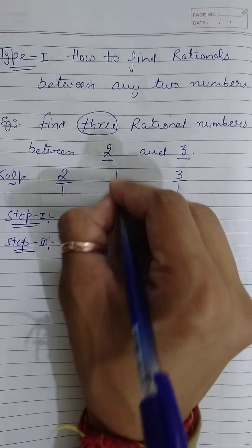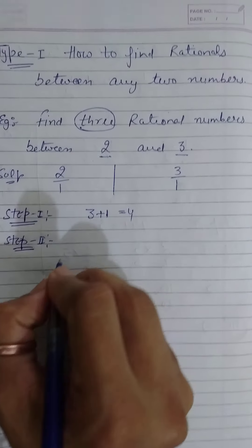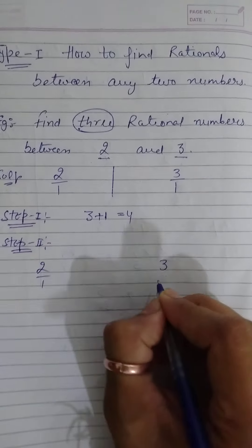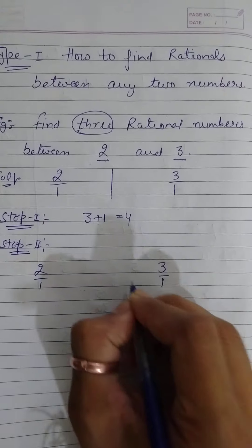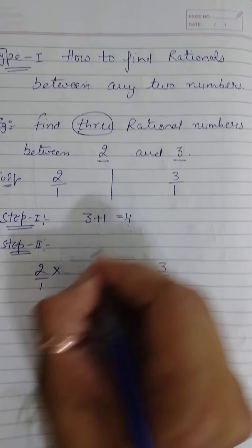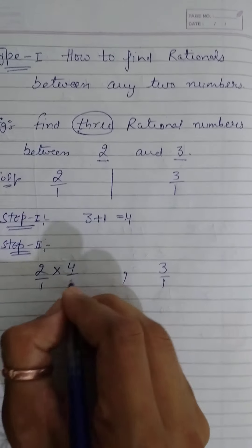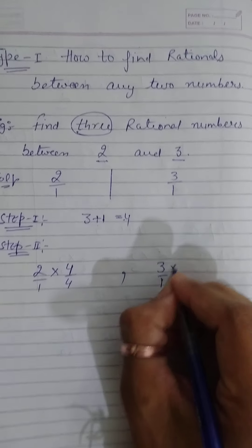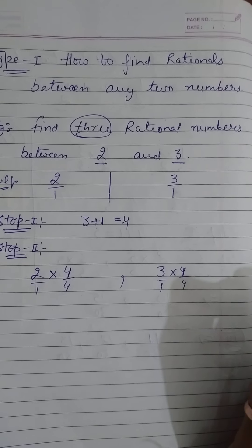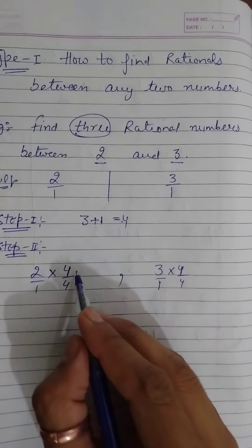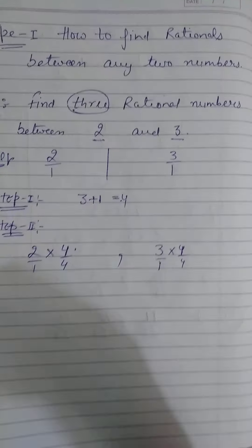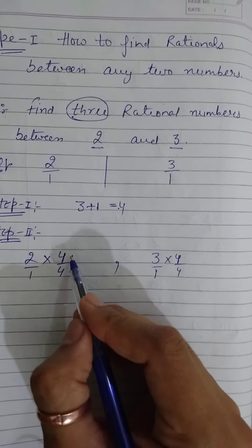Step 2: the numbers are 2 over 1 and 3 over 1. We will multiply and divide the numerator and denominator of both numbers — multiply or divide.